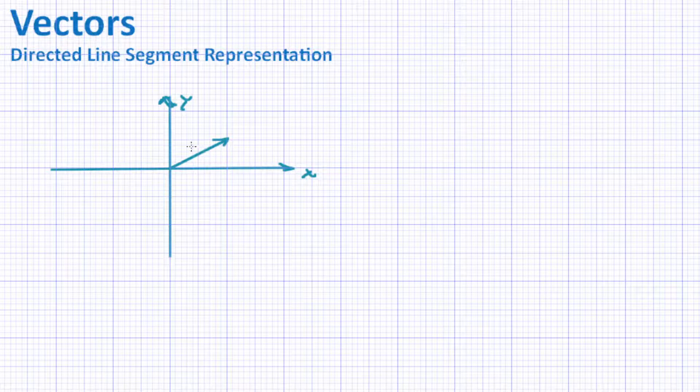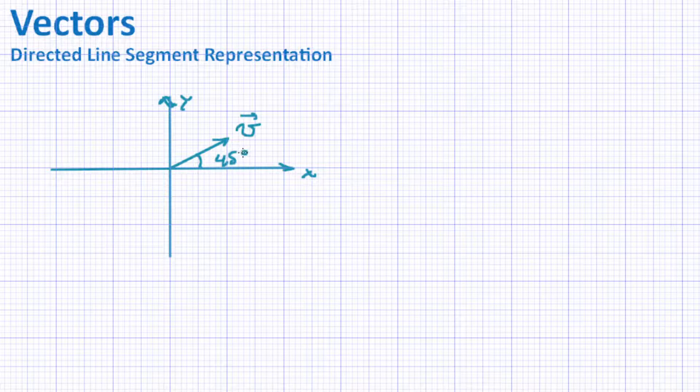Or a more fancy word for an arrow is a directed line segment. So that's called the directed line segment representation. I could give a name to this vector, I don't know, V, and I could measure some angle here, I don't know, 45 degrees. In this case it's not, it's more like 30 degrees.